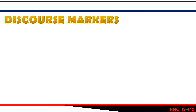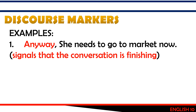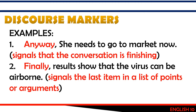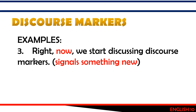Let's have some examples. One: 'Anyway, she needs to go to market now.' The discourse marker used is 'anyway,' which signals that the conversation is finishing. Number two: 'Finally, results show that the virus can be airborne.' The discourse marker 'finally' signals the last item in a list of points or arguments. Number three: 'For example, right now we start discussing discourse markers.' The discourse marker 'now' signals something new.